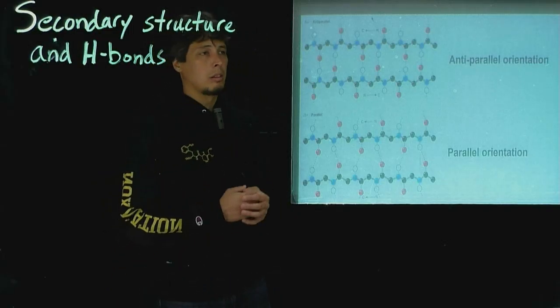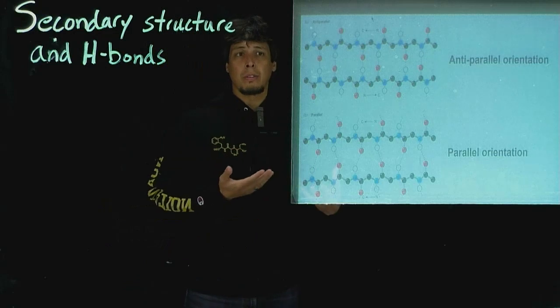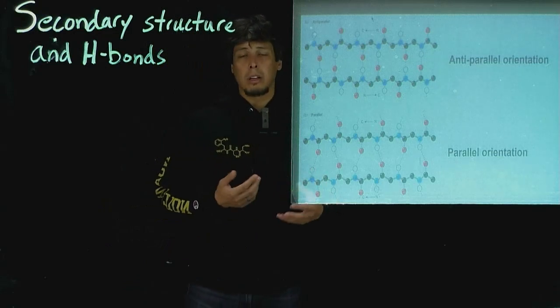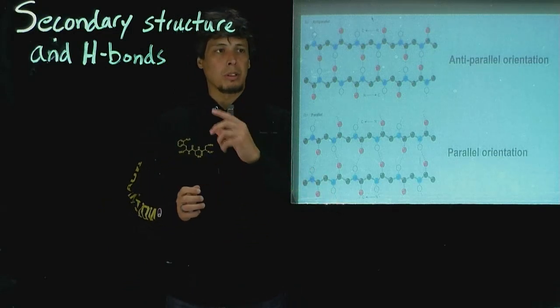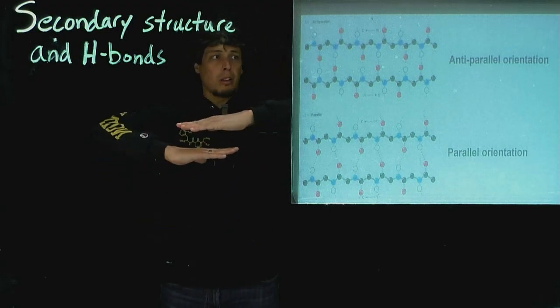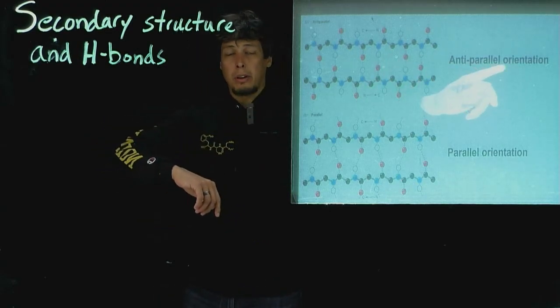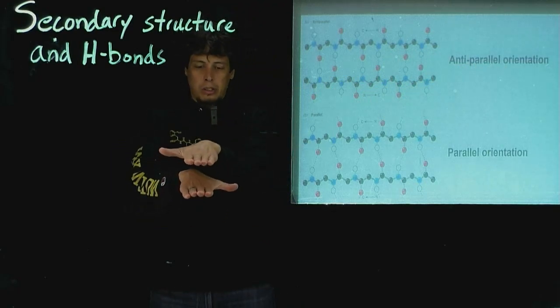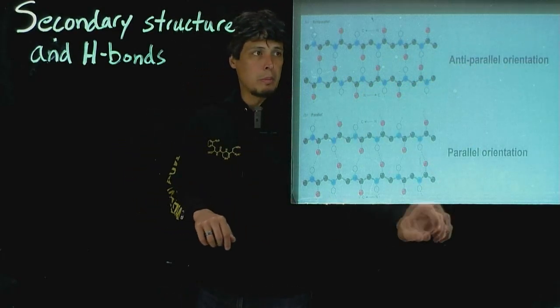Beta sheets are always going to have a different hydrogen bonding pattern because they're not forming twists. What they're forming are sheets that are either anti-parallel to each other, as shown in the top here in the slide, or they're parallel to each other, as shown in the bottom part of the slide.